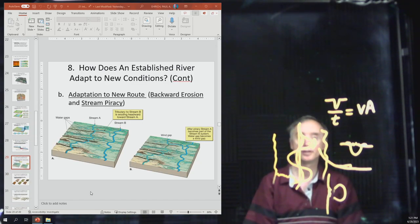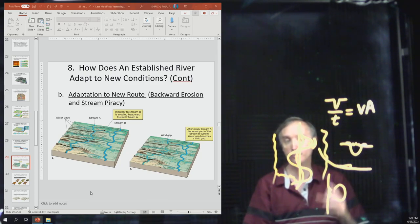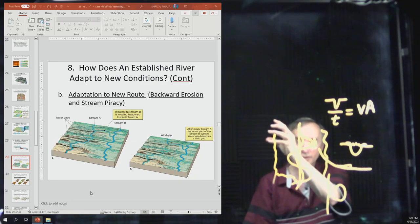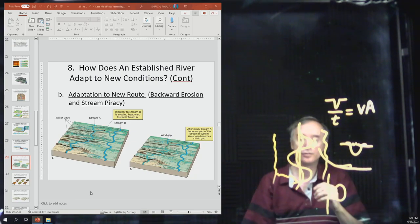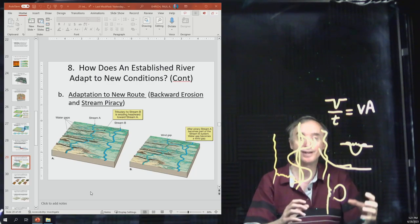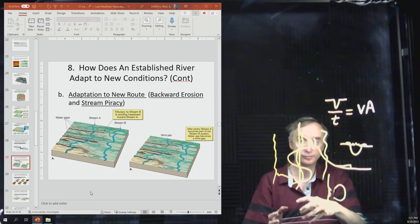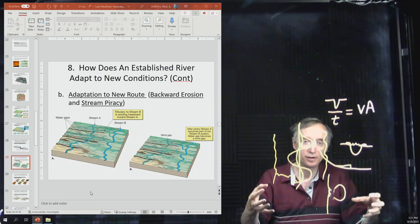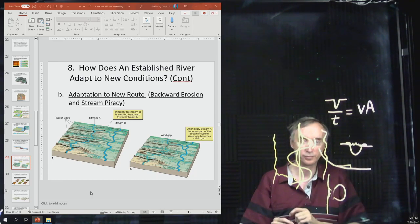Another thing that a river can do is it can erode backwards. So it can erode back upstream, and then what it can do is sometimes it will connect with another river, and it will capture the water that was flowing in that other river. And so we're going to call that stream piracy.